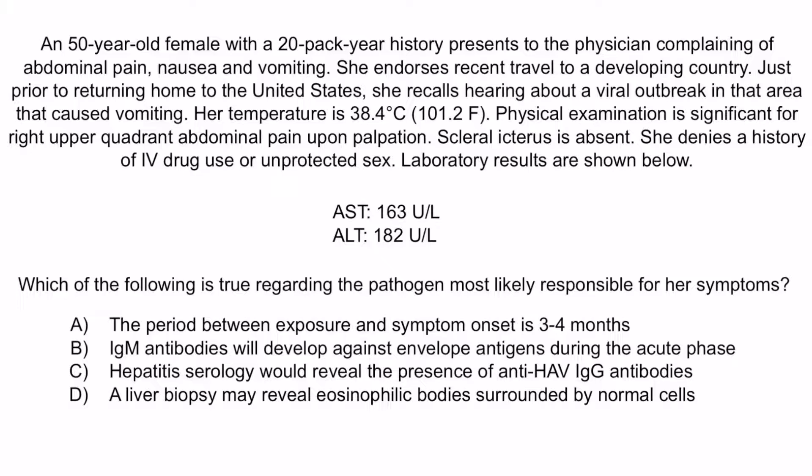A. The period between exposure and symptom onset is 3–4 months. B. IgM antibodies will develop against envelope antigens during the acute phase. C. Hepatitis serology would reveal the presence of anti-hepatitis A virus IgG antibodies. Or D. A liver biopsy may reveal eosinophilic bodies surrounded by normal cells.